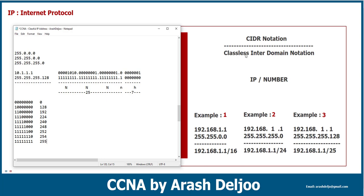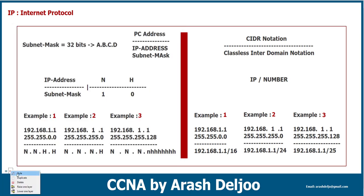This notation is called CIDR notation — Classless Inter-Domain Routing notation. Don't worry about the abbreviation. With CIDR notation, we can write the IP address followed by the number of network bits. For example, here we have 192.168.1.1 with subnet mask 255.255.0.0 — you know that with this subnet mask we have 16 bits as network bits and 16 bits as host bits. You can write this as 192.168.1.1/16. The /16 means the 16 bits of this IP address are the network bits.